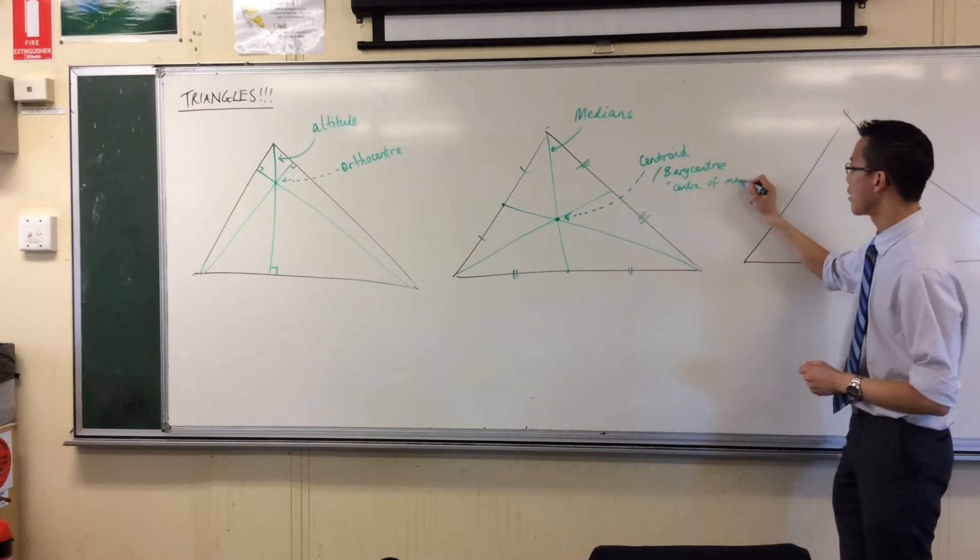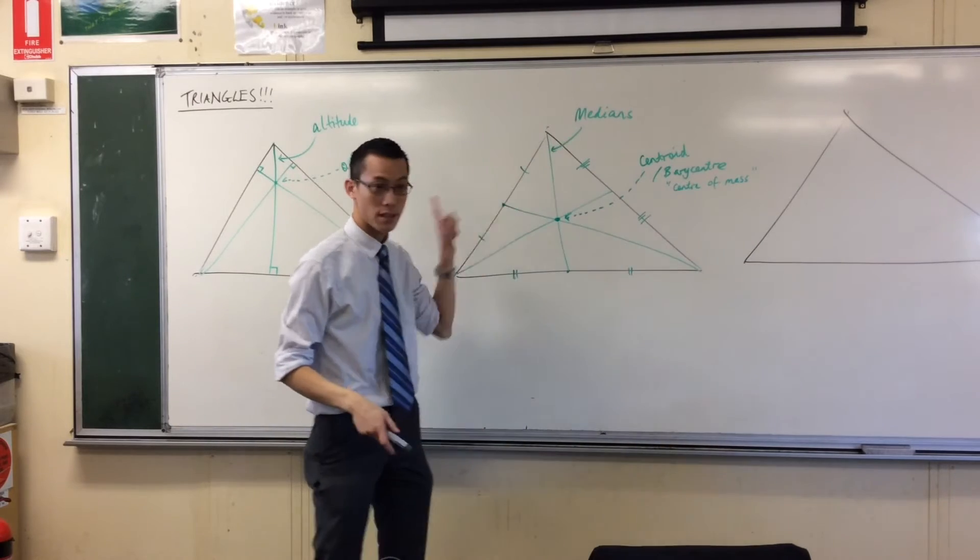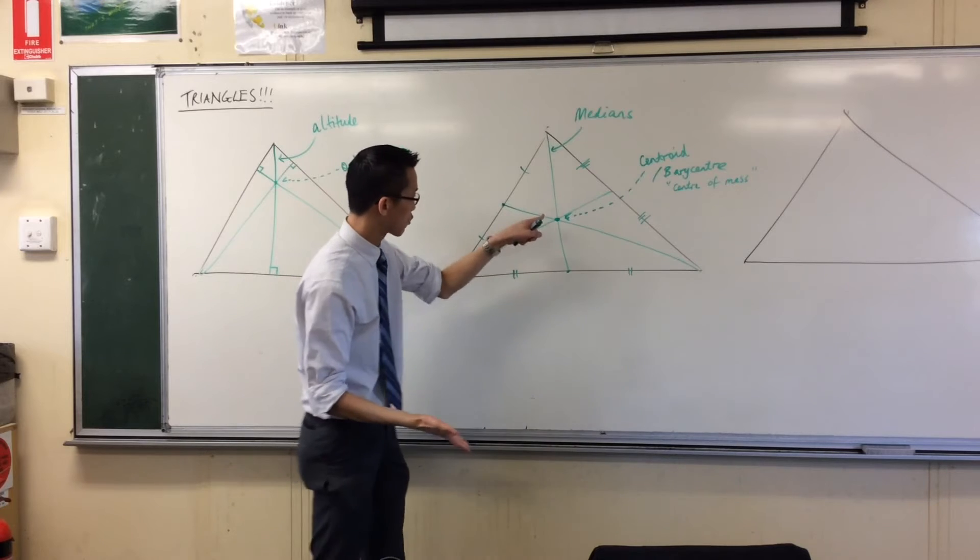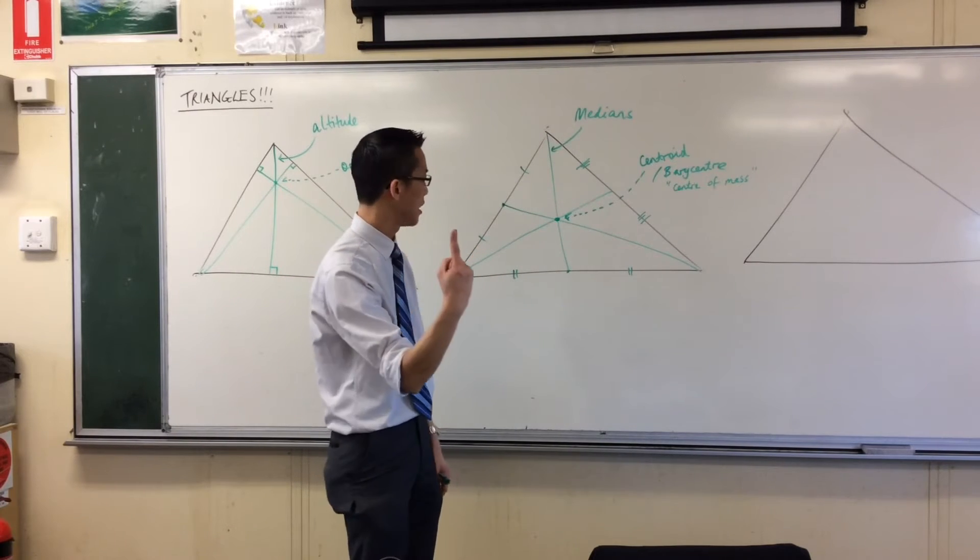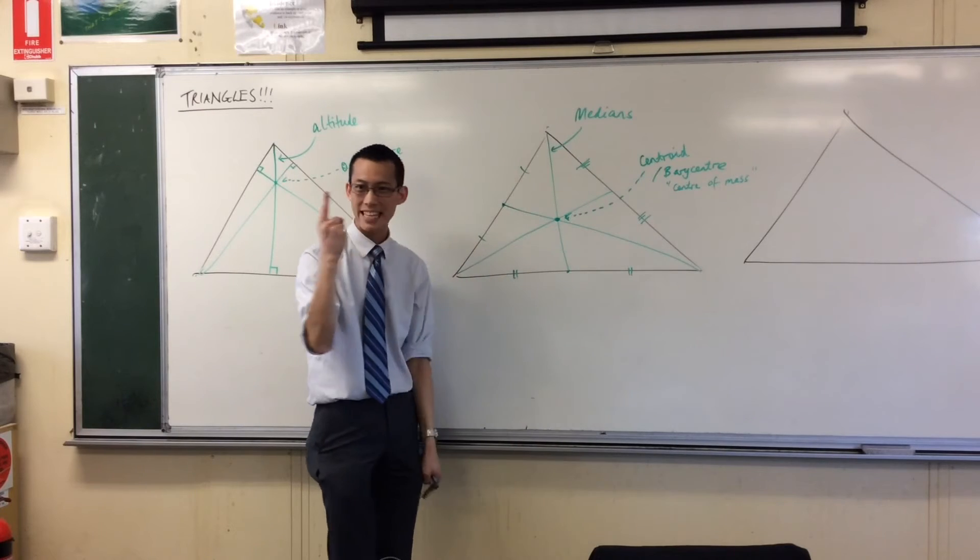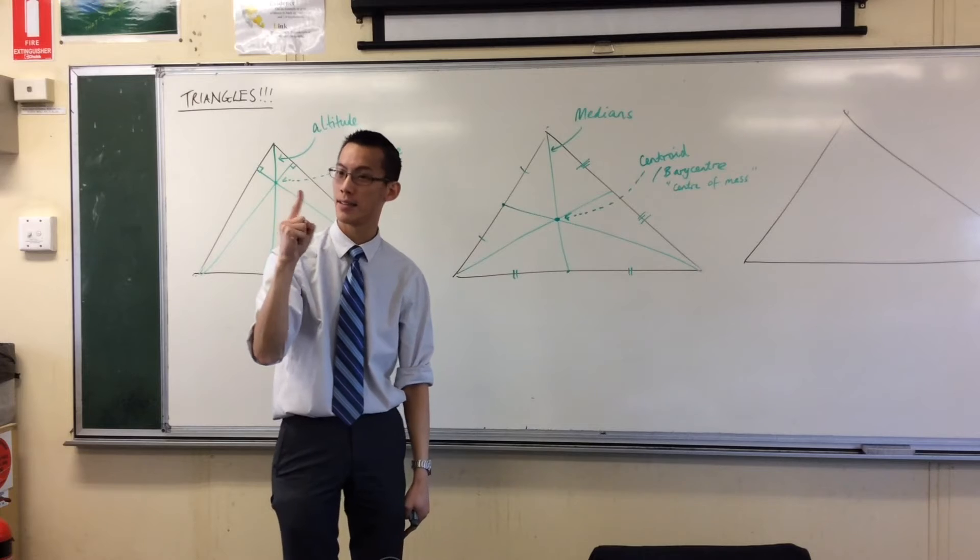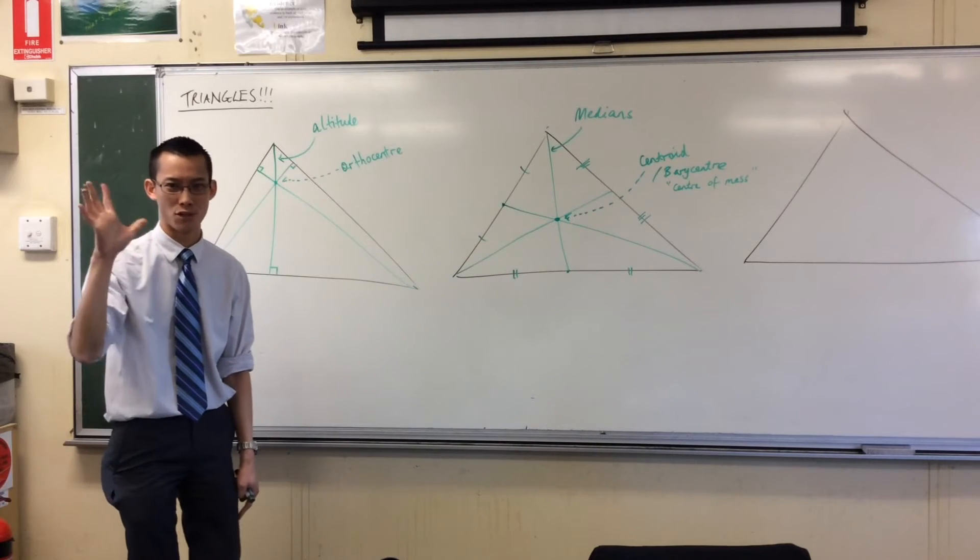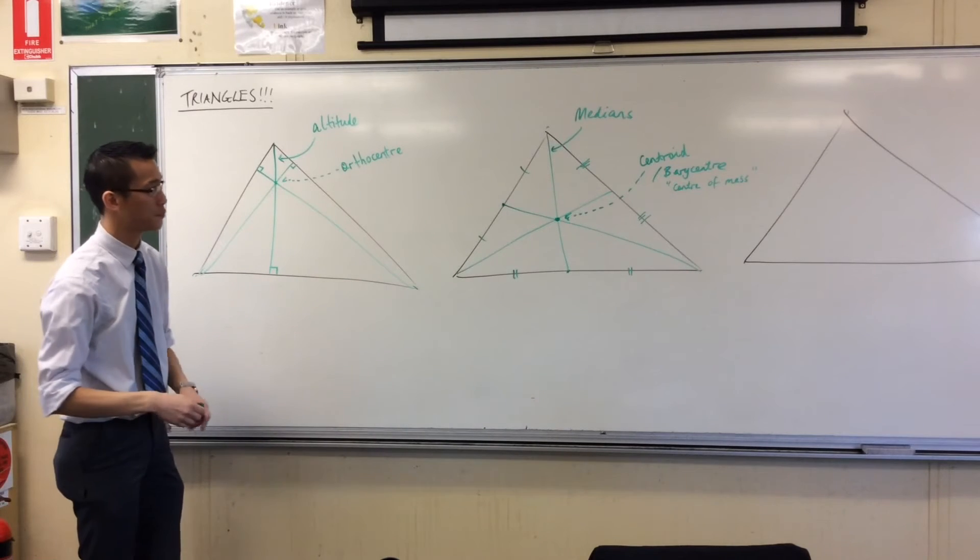So if you cut out a triangle out of a piece of paper and you do this construction, and you get that point and you put your finger underneath that point, the paper triangle will exactly rest on top of your finger because that's the exact center of mass. Assuming uniform gravitational fields and so on. So that's the centroid, also known as the barocenter.